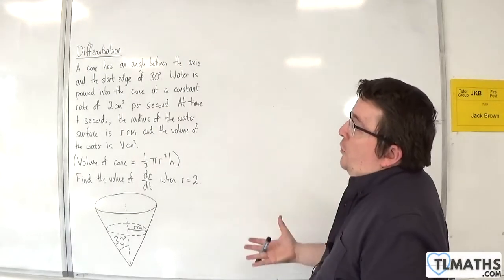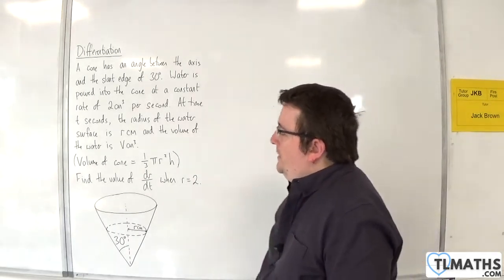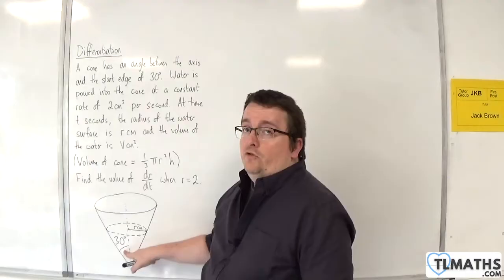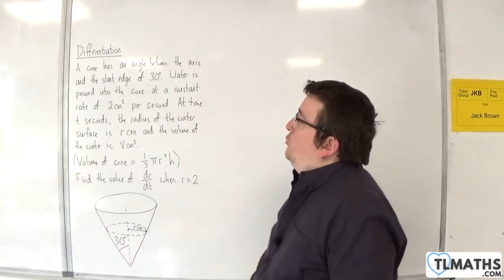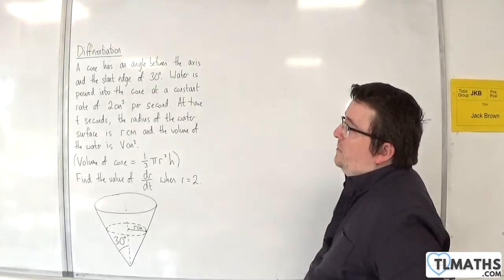In this video, we have a cone which has an angle between the axis and the slant edge of 30 degrees. So that's the 30 degree angle there.